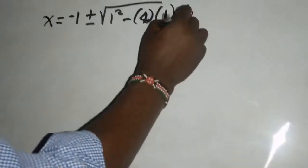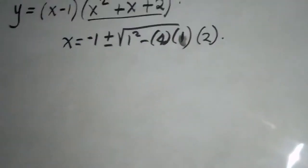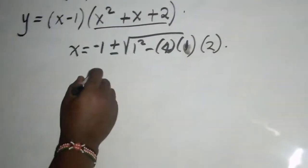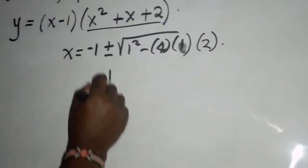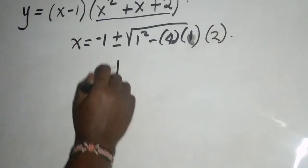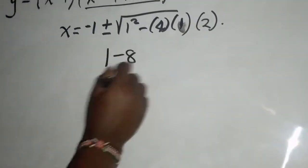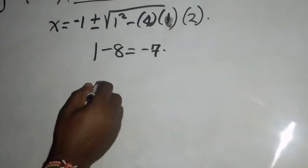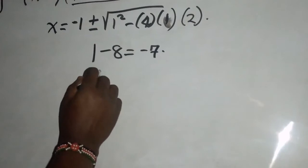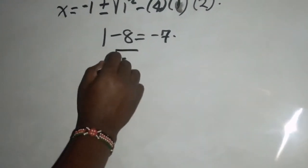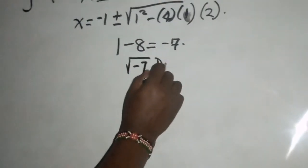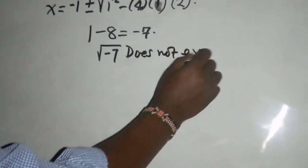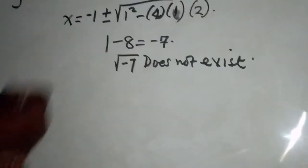It is the discriminant that I want us to concentrate on. One squared is one minus eight, this is negative seven. And we all know that there is no square root of negative seven. This one does not exist.